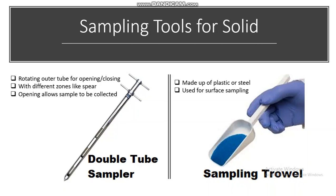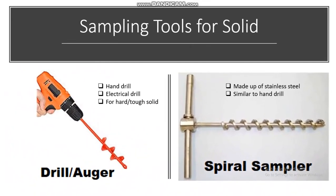The sampling trowel is made up of plastic or steel and is used for surface sampling. Different types of drills are also available, such as hand drills and electric drills, used for hard and tough solids to be taken as a sample. The spiral sampler is made up of stainless steel and is almost similar to a hand drill; it can also be used for taking different samples.